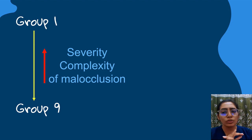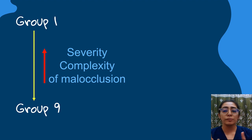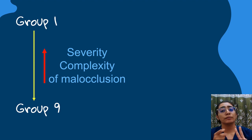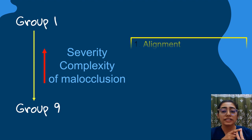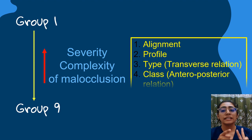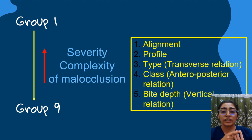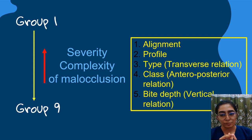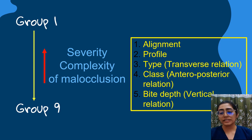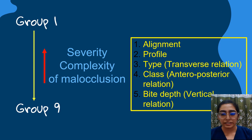Group 9 is therefore the most complex case, as there is a problem in the alignment, a problem in the profile, and problems in the lateral, sagittal, as well as vertical relationships.